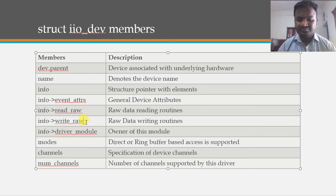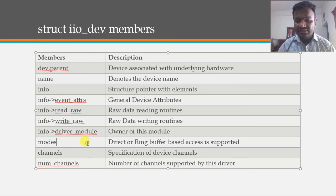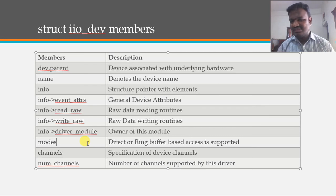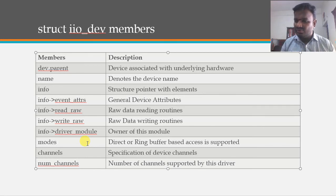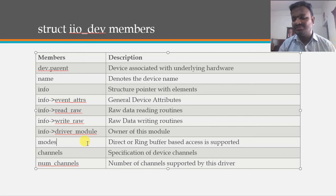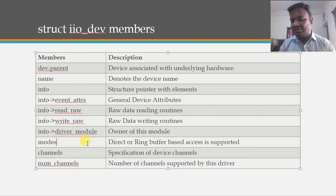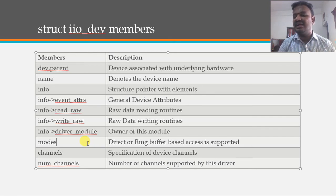When we call in_voltage_raw, the read_raw function gets called and delivers data to user space. The write_raw function is used for digital-to-analog converters. The driver module owner field specifies the module owner, and access modes include direct mode or ring buffer-based access. Ring buffer mode is used when you want to continuously accumulate ADC signal data and plot it without missing any samples.